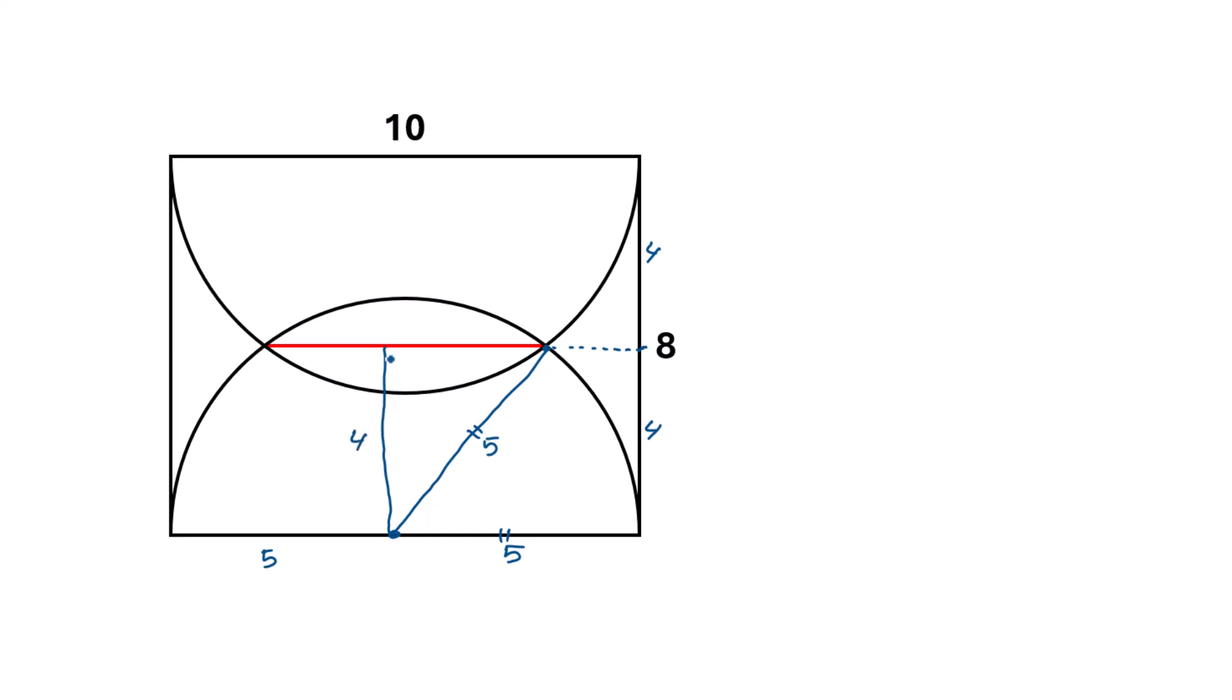Now focus on this triangle. This is a right angle triangle, this angle is 90 degrees, and this point and this point will be the middle point of the red line. Consider this length as x.